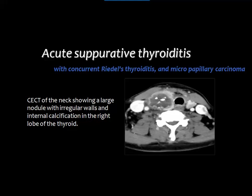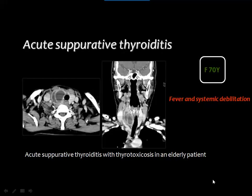Many thyroid lesions may be superimposed. In this example, acute suppurative thyroiditis with radial thyroiditis and micro-papillary carcinoma coexist. The imaging shows a marginally enhancing lesion with necrotic center and matrix calcification; all diagnoses were reached by fine needle aspiration cytology. This patient with fever and systemic debilitation shows an abscess-like lesion in the right thyroid lobe with central fluid hyperdensity and a thickened enhanced margin.